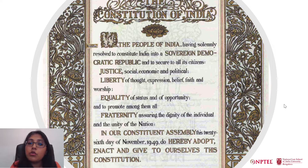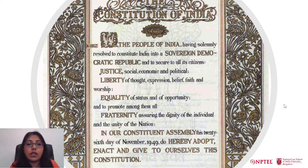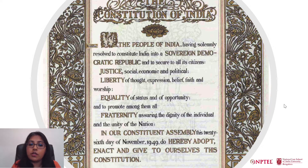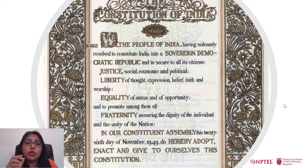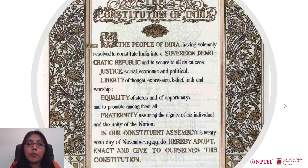The preamble reads: 'We the people of India, having solemnly resolved to constitute India into a sovereign democratic Republic and to secure to all its citizens justice — social, economic and political — liberty of thought, expression, belief, faith and worship, equality of status and of opportunity, and to promote amongst them all fraternity, assuring the dignity of the individual and the unity of the nation. In our Constituent Assembly, this 26th day of November 1949, do hereby adopt, enact, and give to ourselves this constitution.'